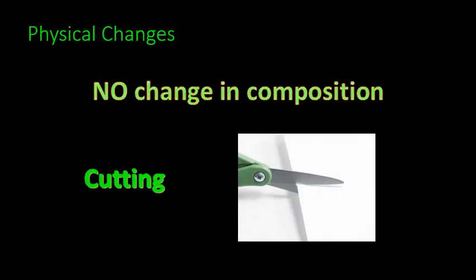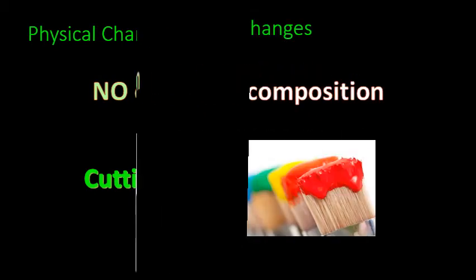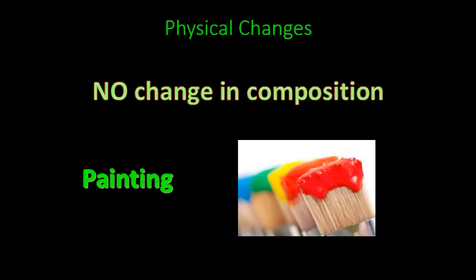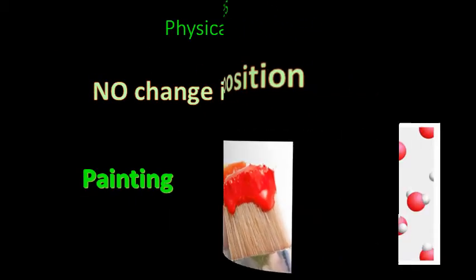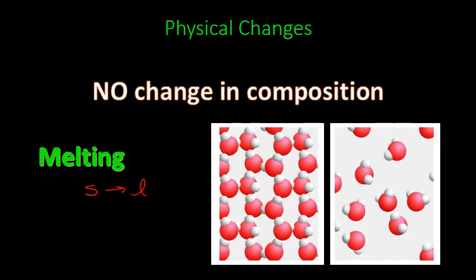Things that you can do, which will change how the substance looks, but it doesn't change the composition. If you cut something. If you paint something. If you melt it. Melting, then, is defined as going from a solid to a liquid. No change in the composition.